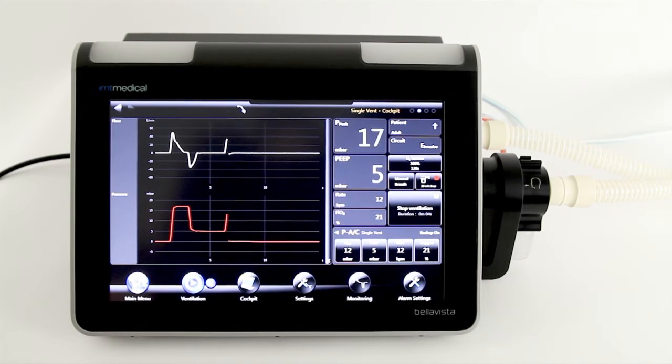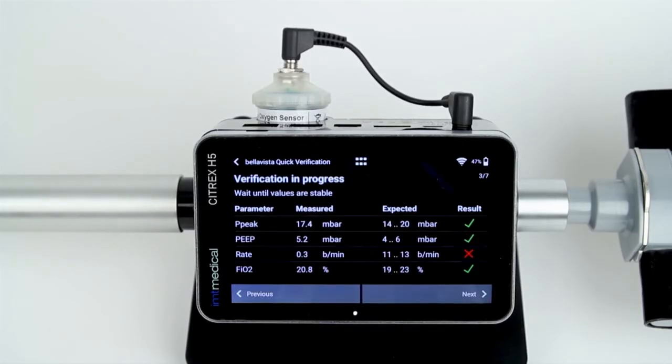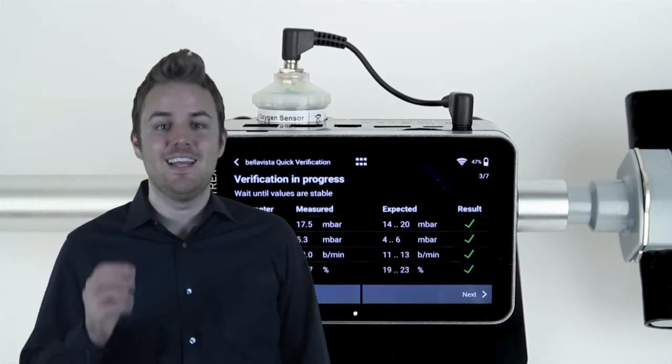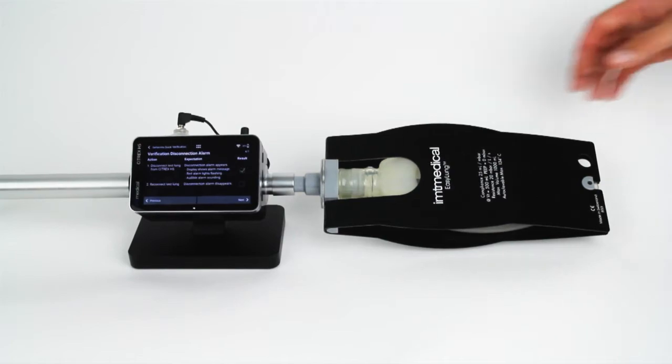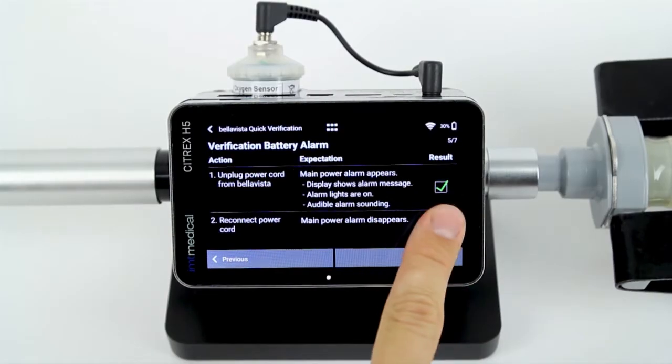Citrix H5 gives you instant test results, fully automatic. Isn't that great? On the next two steps, the app guides you on how to check the alarm and power supply system. It's very easy as well.